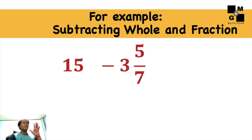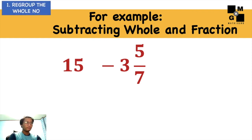For example, we will subtract a whole number and a fraction: 15 minus 3 and 5/7. The first thing we need to do is regroup the whole number. Make sure we will come up with a whole number and another fraction.